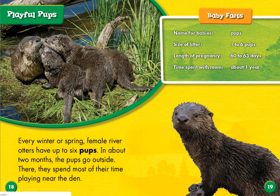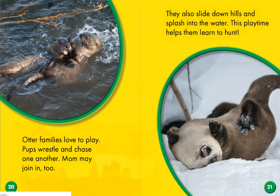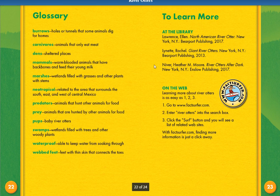Every winter or spring, female river otters have up to six pups — a pup is what they call baby otters. In about two months, the pups go outside, where they spend most of their time playing near the den. Otter families love to play. Pups wrestle and chase one another, and mom may join in too. They also slide down hills and splash into the water. This playtime helps them learn to hunt, which is how they find their food.